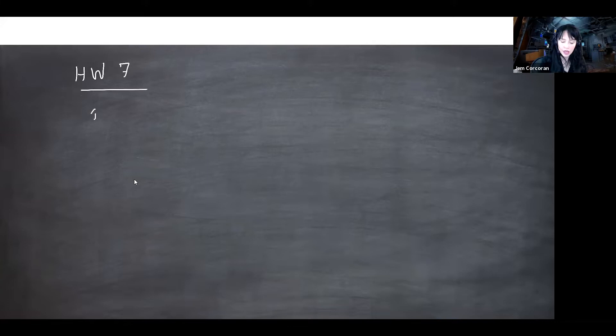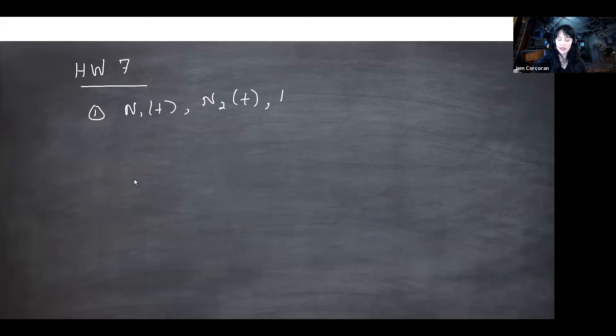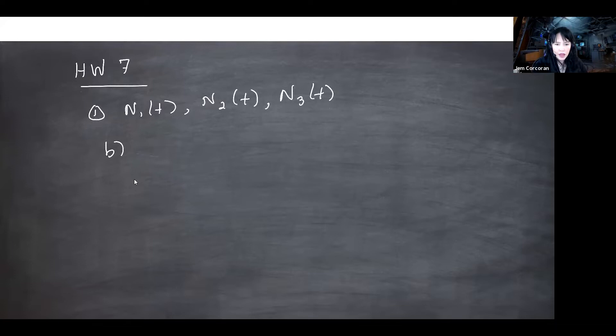Let me start sharing my screen. Problem one on the current homework is really a problem that could have been on the last homework — it's just another one of these superposition and thinning problems. I would define for this problem three processes: N1, N2, and N3, that will be the number of checking account transactions by time t, the number of savings account transactions by time t, and the number of mortgage transactions by time t. In part b, in the first 30 minutes the bank is open, exactly 20 customers have come into the bank.